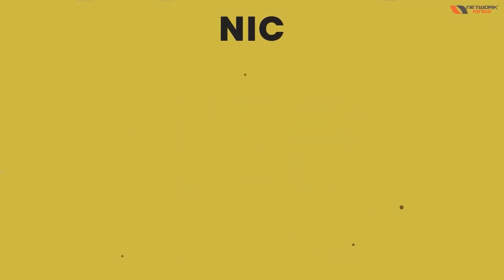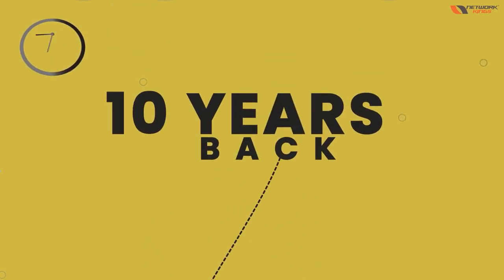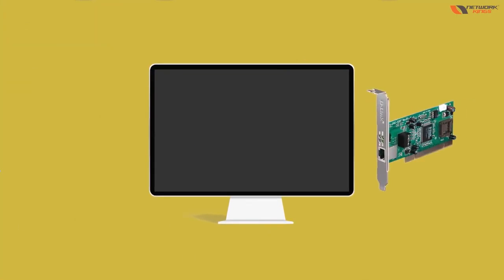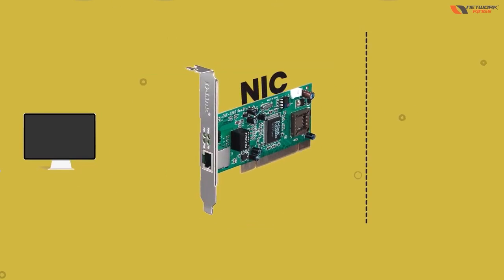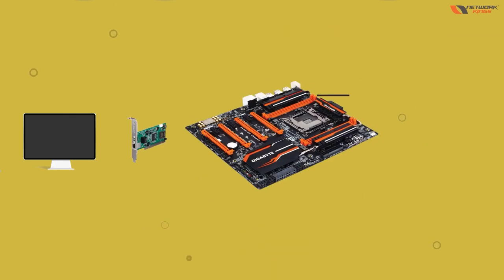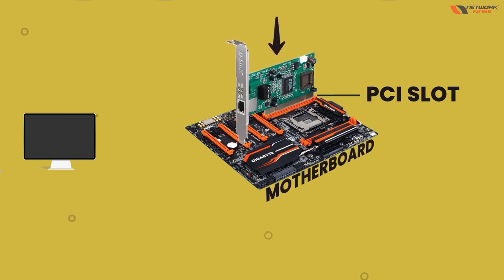So what is NIC? NIC is this chip called Network Interface Card. A long time back, 10-15 years ago, in every computer we had to buy separately this NIC card, which we add in the PCI slots. It's a chip basically, and we place it in the PCI slot on the motherboard. This is very, very old — like 10-15 years back.